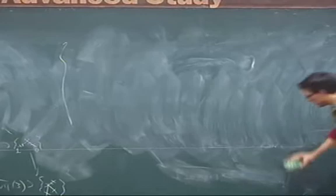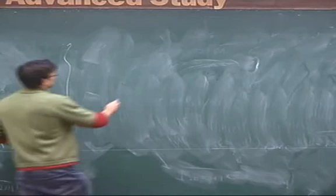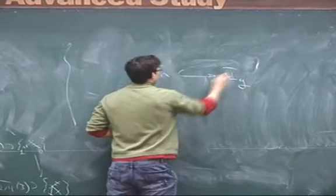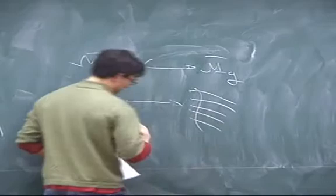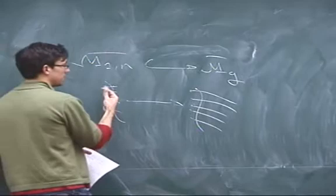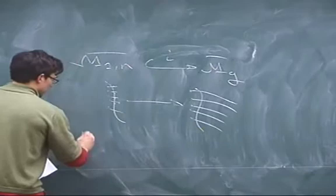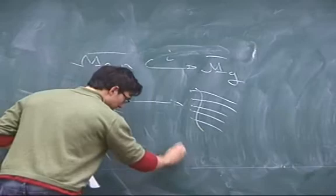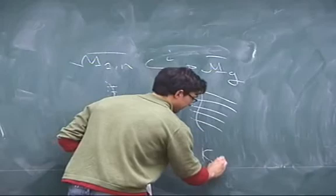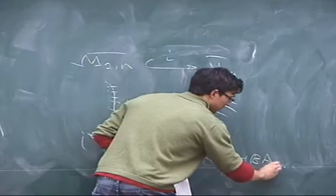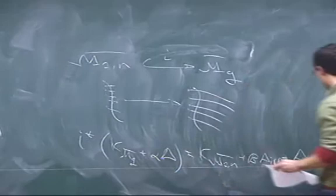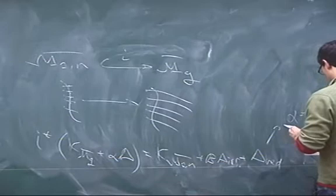We can actually use all this technology to compute threshold values for the minimal model program on M̄_g. We think of M_{1,n} bar as a subvariety of M_g bar by taking the n marked points and gluing on some fixed high-genus curves at those points. Pulling back the divisors K + α·δ to this subvariety, it turns out that this is numerically proportional to our divisor D(β) for the change of variables α = (−11 + 24β)/(1 + 12β).